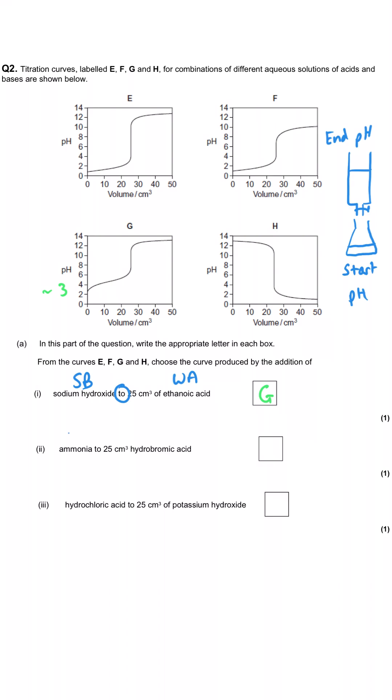And then secondly, we're adding ammonia, a weak base. So that means it will be a medium to high finishing pH, about nine perhaps. And we're adding it to hydrobromic acid, which you won't come across very often. That's HBr. That's likely to be a strong acid. Let's see if there's any confusion in there. We've got a weak base finishing pH. No, there's no two options. There is only this one that finishes at a weak base pH around about nine or ten. So that answer has to be curve F.